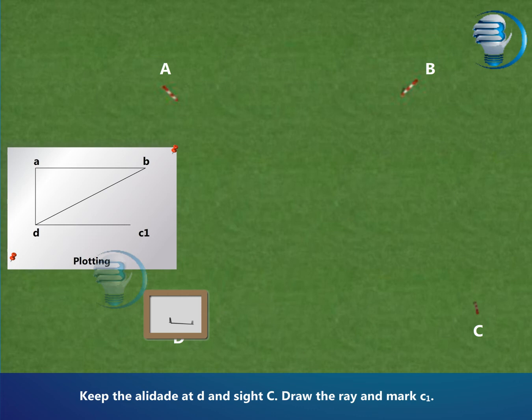Keep the alidate at d and site C. Draw the ray and mark c1.